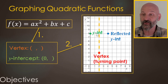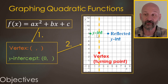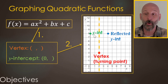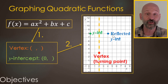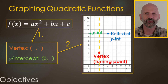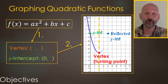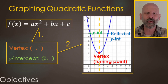This y-intercept is two away — it's at eight for the y — and it's two away from the axis of symmetry. So your reflected y-intercept is also going to be two away but on the other side. Then you can draw your u-shape, your parabola.